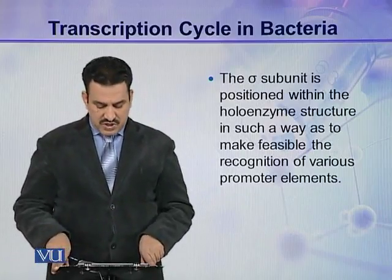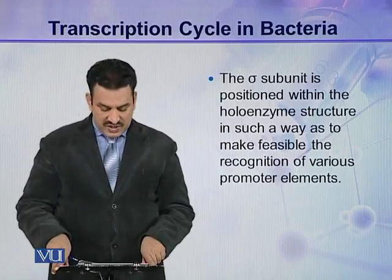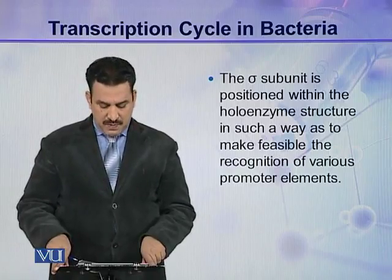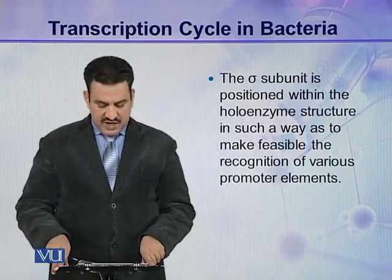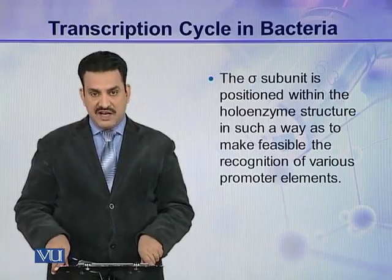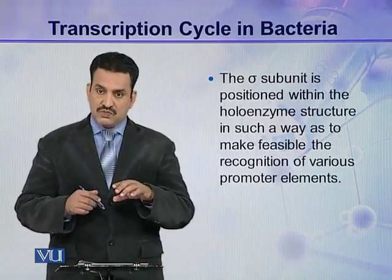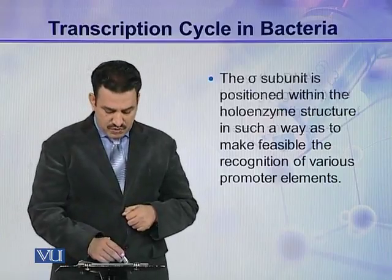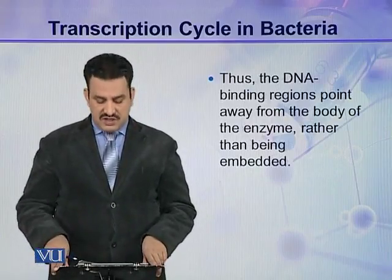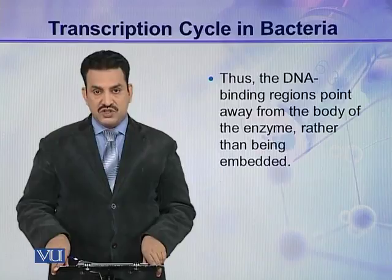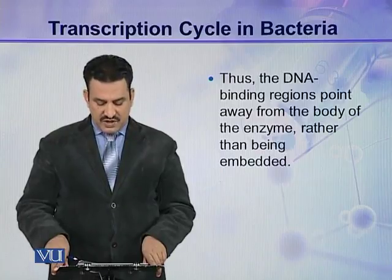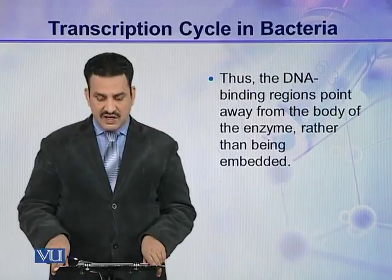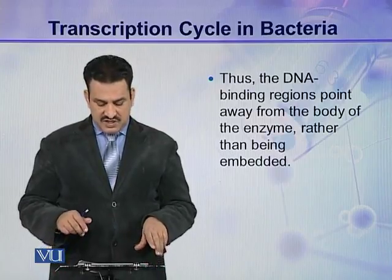The sigma subunit is positioned within the holoenzyme structure in such a way as to facilitate recognition of various promoter elements. The DNA binding regions of sigma point away from the body of the enzyme rather than being embedded within it.